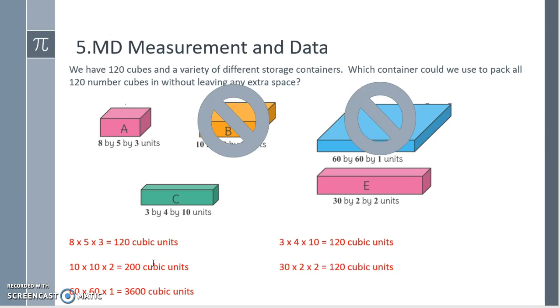Part C is 3 by 4 by 10, so 12 times 10 is 120 cubic units. We could use letter C. E is 30 by 2 by 2. 30 times 2 is 60 times 2 is 120 cubic units. So we could use containers A, C, and E to store our 120 cubes without leaving any extra space.